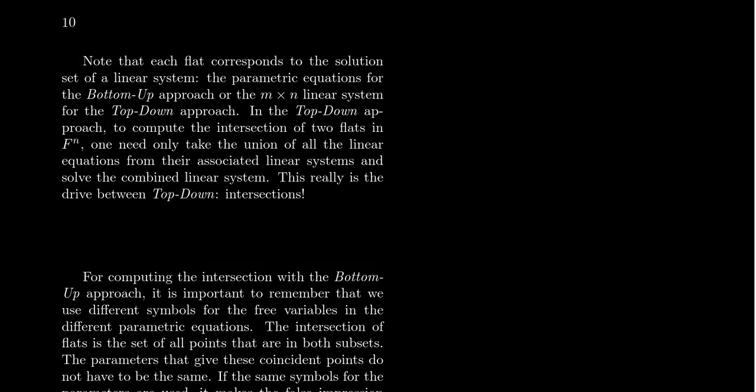We've been talking about how one can construct algebraic representations of geometric affine sets using both the bottom-up and the top-down approach. What happens if we want to start intersecting these things? After all, solving a system of equations oftentimes comes down to having two lines intersect each other, and we want to figure out where's that point of intersection.